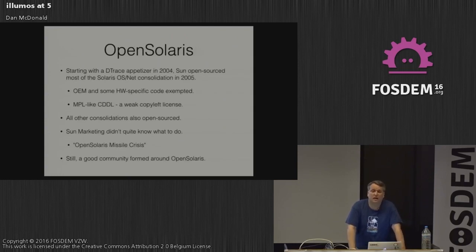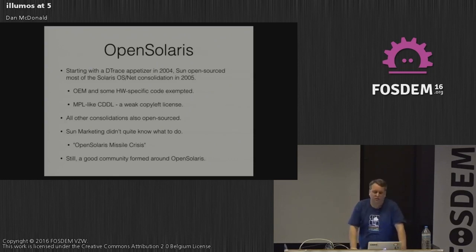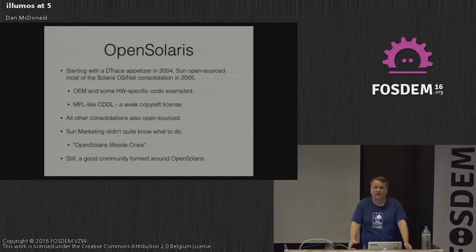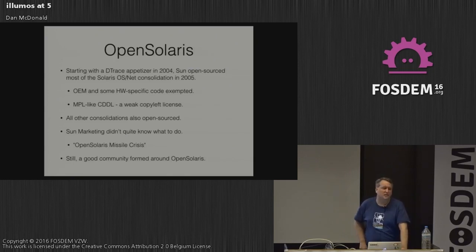After Solaris 10 released, there had been brewing discussion about open-sourcing Solaris. Starting with the DTrace appetizer in 2004, we open-sourced most of the Solaris OS/Net consolidation in 2005. Some OEM code couldn't be published, but everything else was covered under the CDDL, an MPL-like community development and distribution license — a weak copyleft. If you alter an existing file under CDDL, you must contribute changes back to the community. You can introduce new files under almost any license you want; GPL happens not to be one of those.